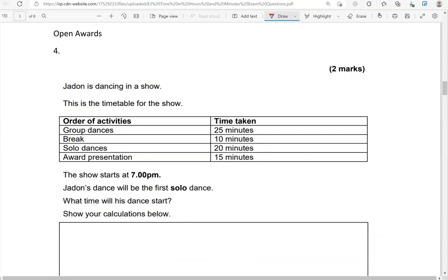Jaden is dancing in a show. This is a timetable for the show. Order of activities and time taken: group dances, 25 minutes; break, 10 minutes; solo dances, 20 minutes; award presentation, 15 minutes. The show starts at 7 PM. Jaden's dance will be the first solo dance. What time will this dance start? Show your calculations below.